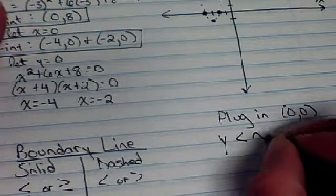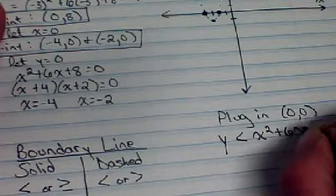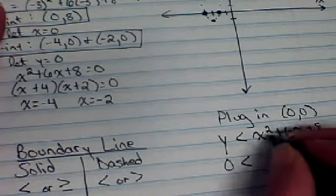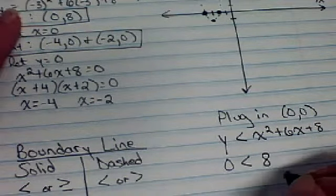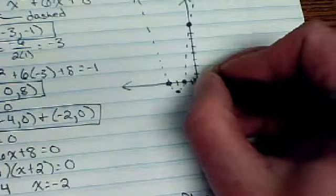So if we plug in 0, 0, our inequality was y is less than x squared plus 6x plus 8. I'll plug in 0 for y and 0 for all the x's, which is just going to leave me with the 8. Is 0 less than 8? Yes. So that point 0, 0 is part of my solution set. It's a yes.